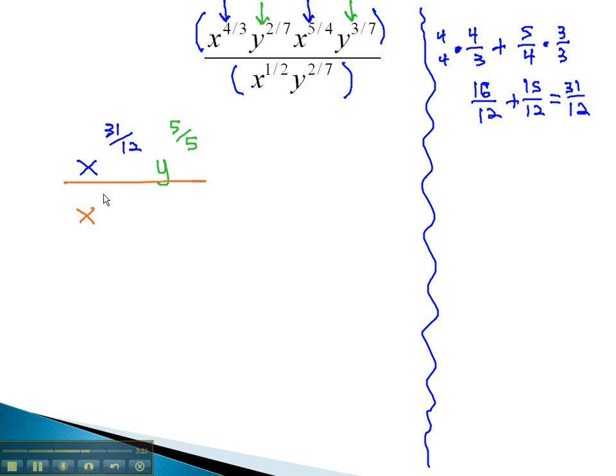There is nothing to simplify in the denominator. We have x to the 1/2, y to the 2/7. Now, to simplify the division, we will want to subtract the exponents on the x to get the new exponent on x.